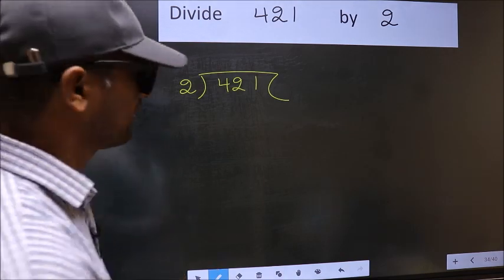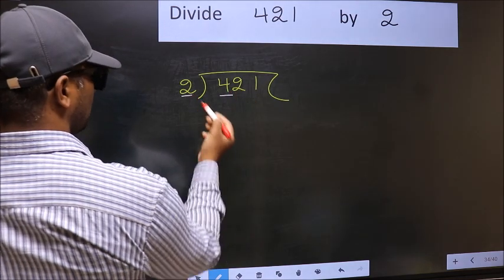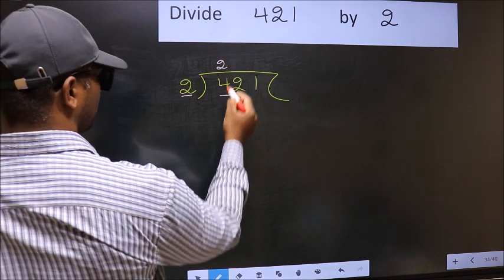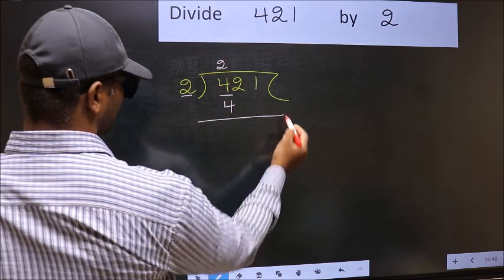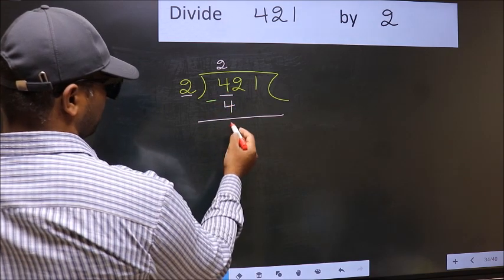Next. Here we have 4. Here 2. When do we get 4 in 2 table? 2 times 2 is 4. Next, you should subtract. 4 minus 4 equals 0.